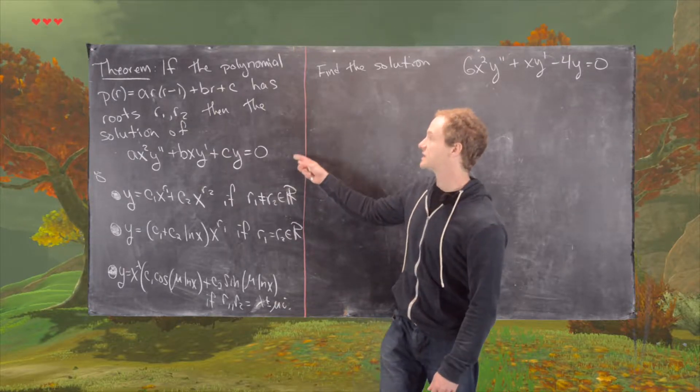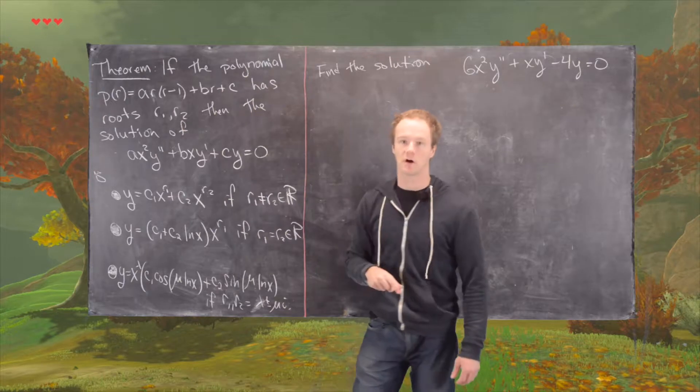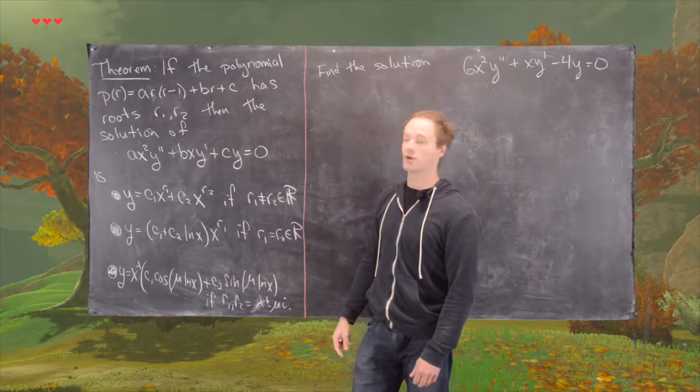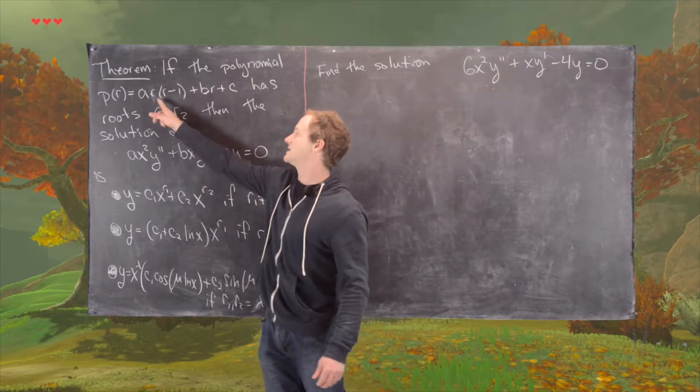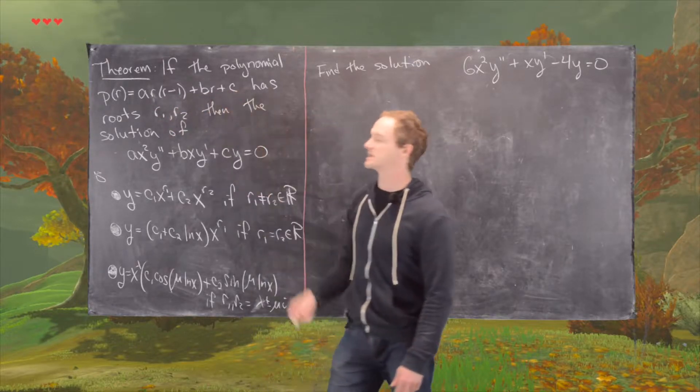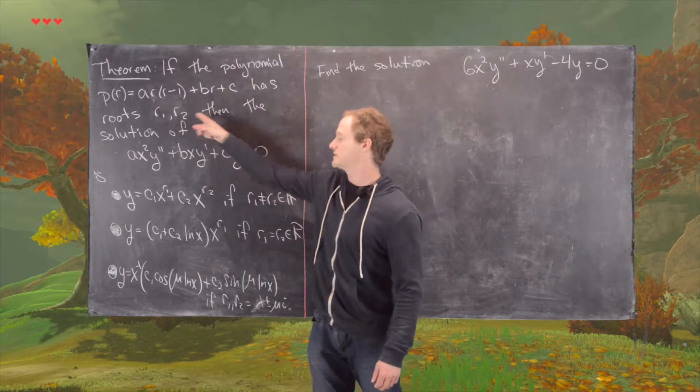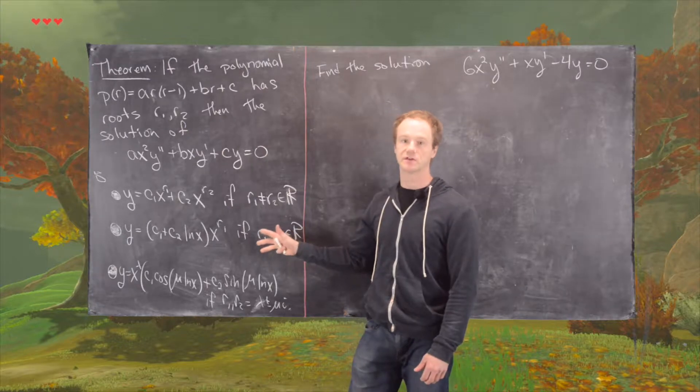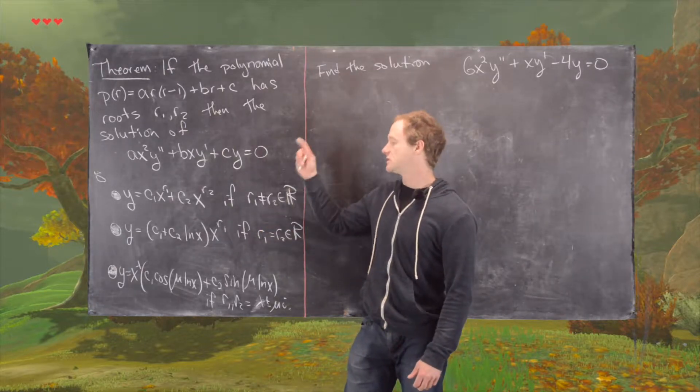And there's an associated polynomial that goes along with it known as the indicial polynomial. And that's given by A times R times R minus 1 plus BR plus C. And the roots of that polynomial govern the solutions to this differential equation.